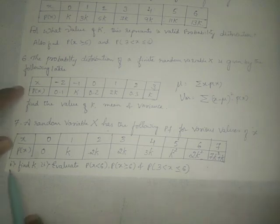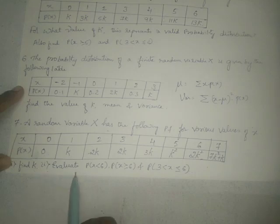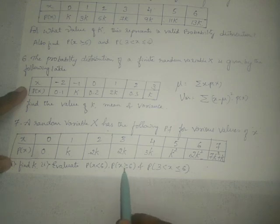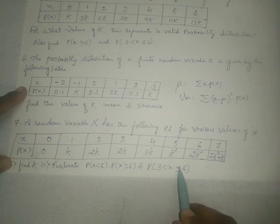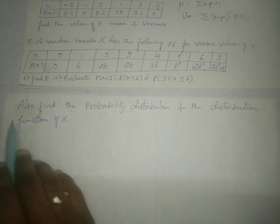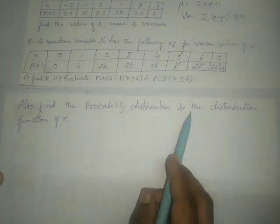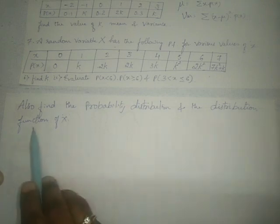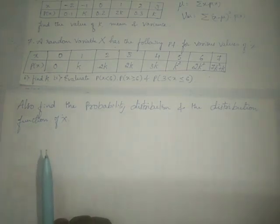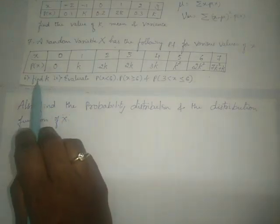Find the value of K. Then evaluate P(X less than 6), P(X greater than or equal to 6), and P(3 less than X less than or equal to 6). Also find the probability distribution and the distribution function of X.